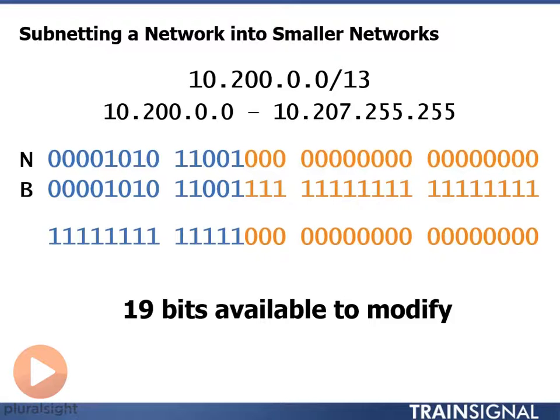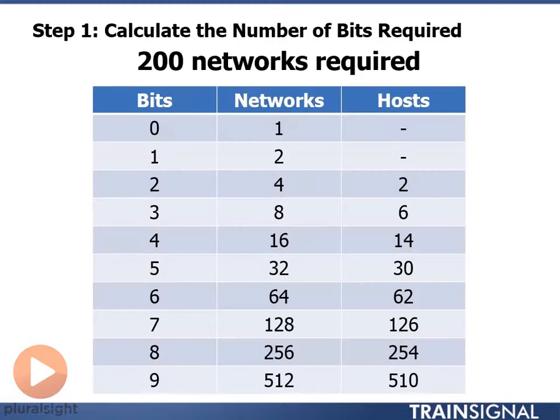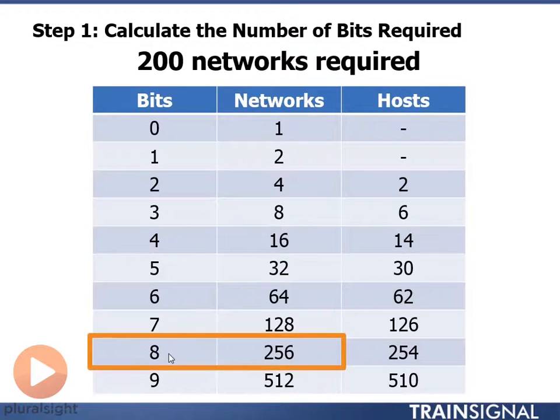What this means is we have 19 bits available to modify. This is a lot of bits. So let's pull up our calculator. We need 200 networks. If I look up in my networks, I find that 128 is too few. 256 is too many, but we have to have at least 256, so we need to borrow 8 bits.